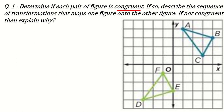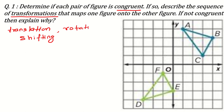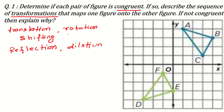If so, describe the sequence of transformations. Transformations means there are some types of transformations you have studied. Like translation — translation means shifting only. Then rotation — rotation means clockwise or counterclockwise. Then reflection — reflection means image, with respect to x-axis or with respect to y-axis. And the last was dilation. These are the four types of transformations. If you want to know about these in detail, you can see my videos — there are separate videos for every topic.